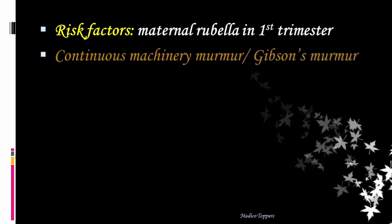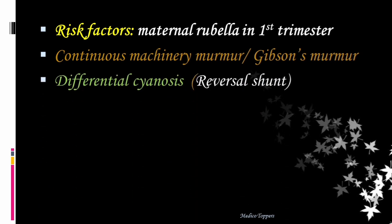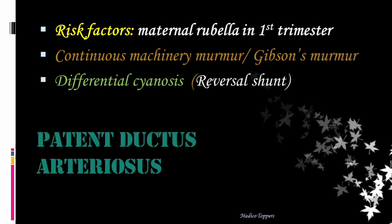Here the risk factor would be maternal rubella in the first trimester. We can hear the continuous machinery murmur, also called Gibson's murmur. The presentation will be of differential cyanosis because of reversal shunt, and the condition is patent ductus arteriosus.